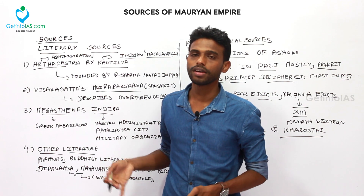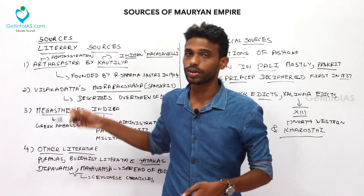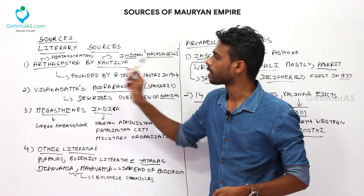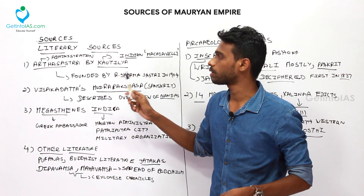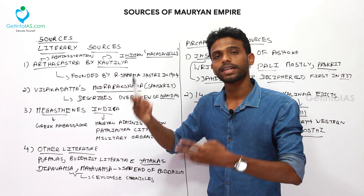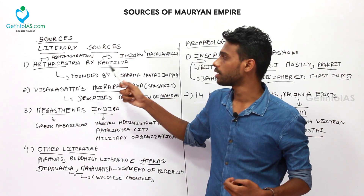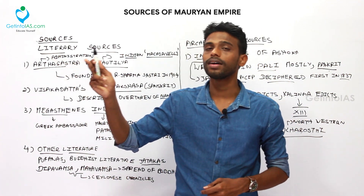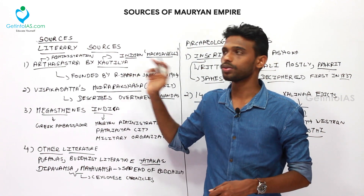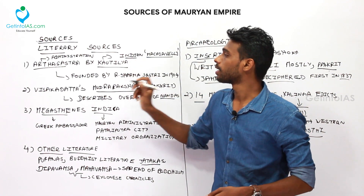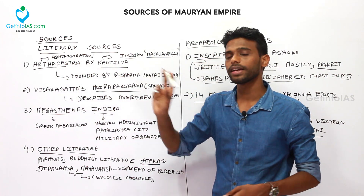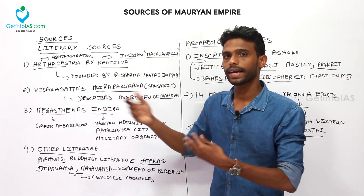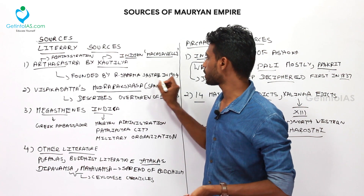Let's revise. Literary sources and archaeological sources played an important role during the Mauryan Empire. The first literary source is the Arthashastra by Kautilya, which explains the administration, crime, court, law, justice, and order of the Mauryan Empire. Kautilya was the chief advisor of Chandragupta Maurya and assisted in dethroning the last Nanda ruler, Dhanananda. Kautilya was also called the Indian Machiavelli. This book was discovered by R. Sharma Sastri in 1904.